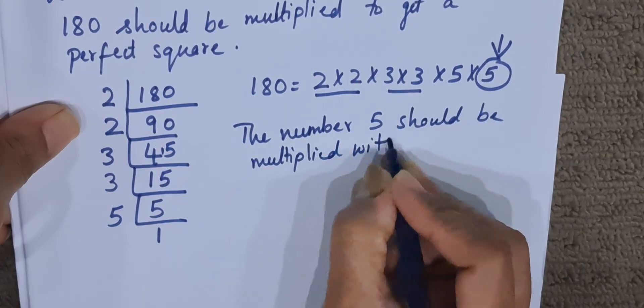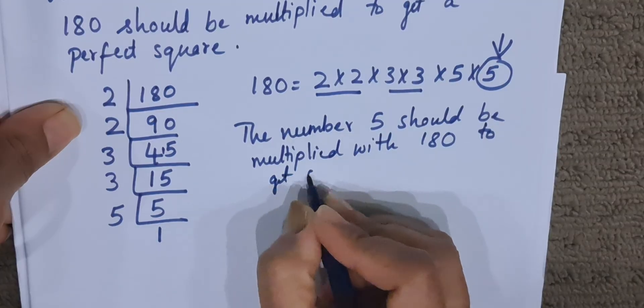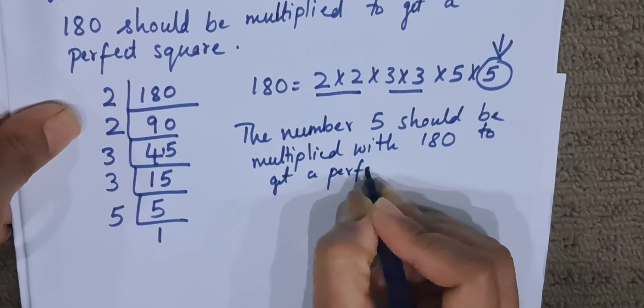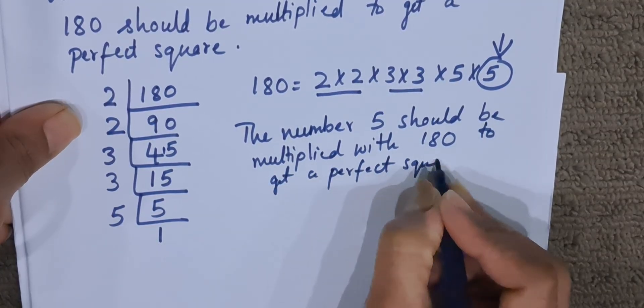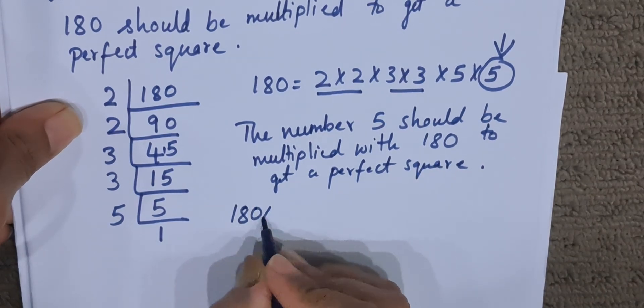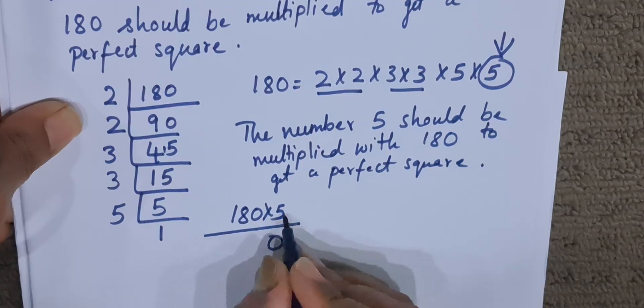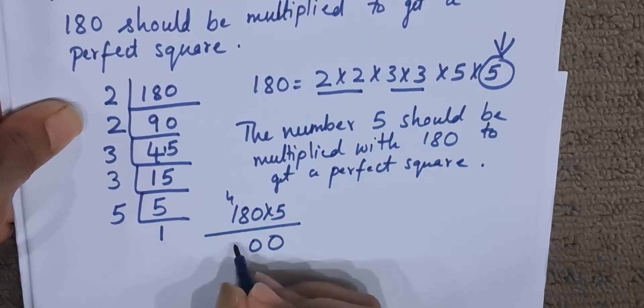With 180 to get a perfect square. Now if you want to verify, we can also verify. Now 180 × 5, we will multiply and see. 5 × 0 is 0. 5 eights are 40, 5 ones are 5, plus 4 is 9. 900.